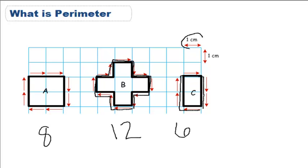We can't forget our units, and in this case, each box meant 1 centimeter. So, A is 8 centimeters, B is 12 centimeters, and C is 6 centimeters.